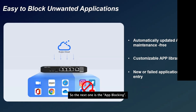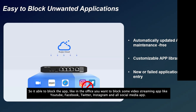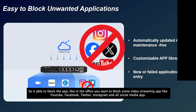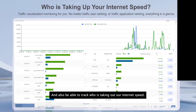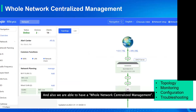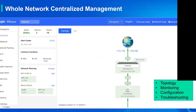The app blocking feature lets you block applications in the office — for example, video streaming apps like YouTube, Facebook, Twitter, and Instagram. We're also able to track who is using internet speed. In the router you can see which IP is generating how much traffic, what websites they are visiting.